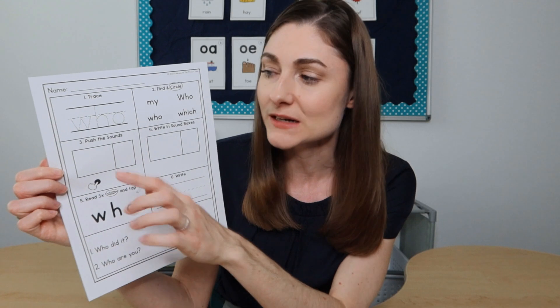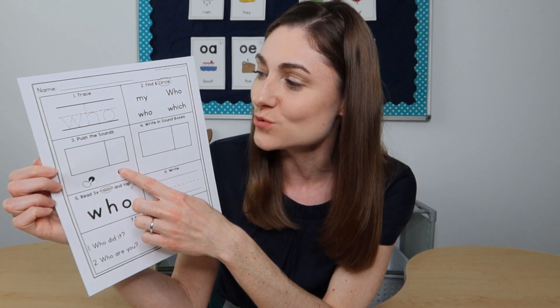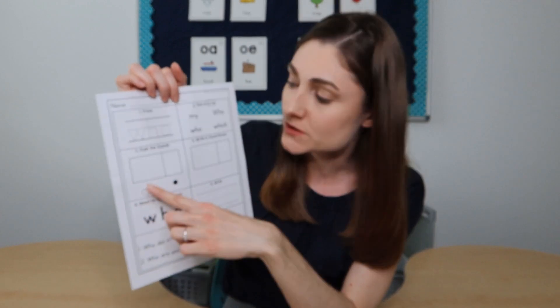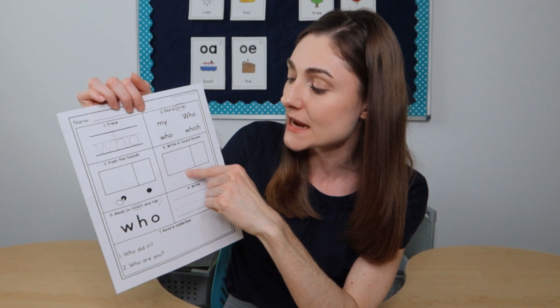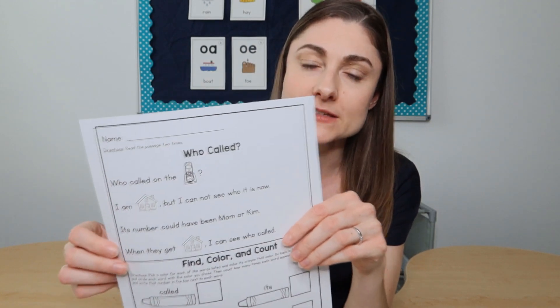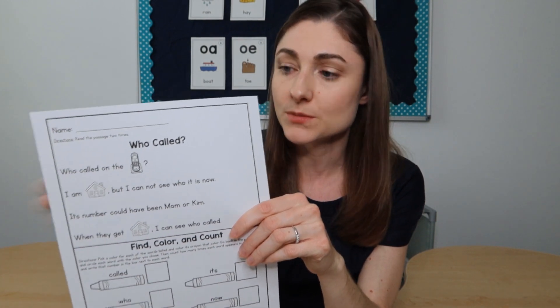The word "who" is tricky because normally the W and the H don't work together to say that sound, and the O doesn't always work to say "oo" — normally we see that spelled with two O's. I would have gone over all of this with my kids already. Then they could do this independently or with me in small group, where they're tracing the word, finding and circling it, using counters to push the sounds, and writing the word — W-H to represent one sound and O to represent the other — in sound boxes. I have them read it out loud three times, tapping W-H-O as they go, then write it, and then read little sentences with the word so they get in-context practice. There's also a little passage that has not only "who" but other words they've been working on, so it's integrated practice.